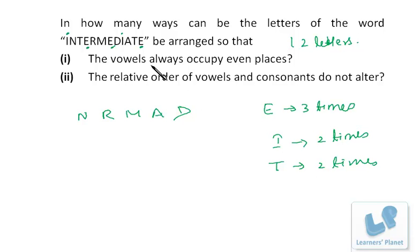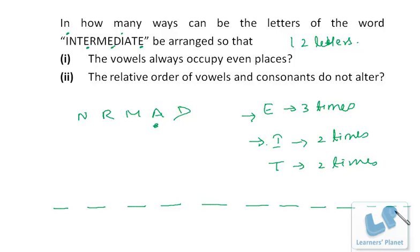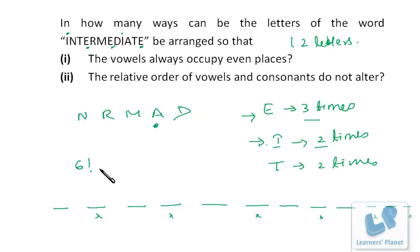Case one: vowels always occupy even places. The vowels are E, I, and A — six vowels in total. In twelve positions, the even positions are 2, 4, 6, 8, 10, 12 — six even places. All six are filled by the six vowels. Six vowels in six positions can be arranged in 6! ways, divided by 3! for E repeated three times, and by 2! for I repeated two times.